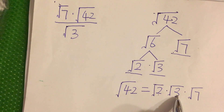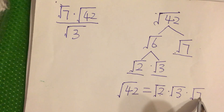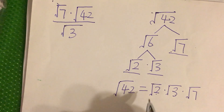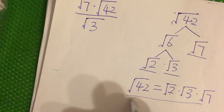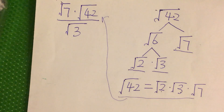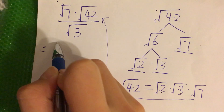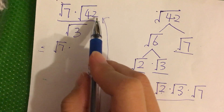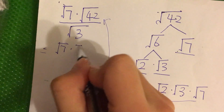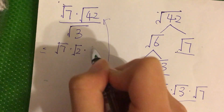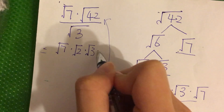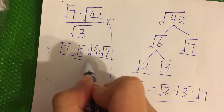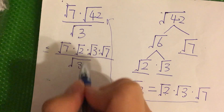So 2 times 6 times 7 gives us 42. We copy this into our expression. Square root of 7 is copied down, and square root of 42 gives us square root of 2 times square root of 3 times square root of 7, divided by square root of 3.